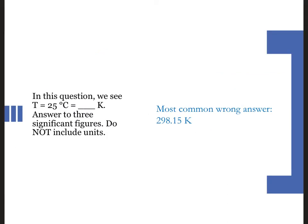On this question, I gave you the temperature, T equals 25 degrees Celsius. I understand you want to take 25 and add to that 273.15 to get 298.15. But the key point here is that I wanted three sig figs. The most common wrong answer was 298.15. So really pay attention to the significant figures so you don't lose easy points.